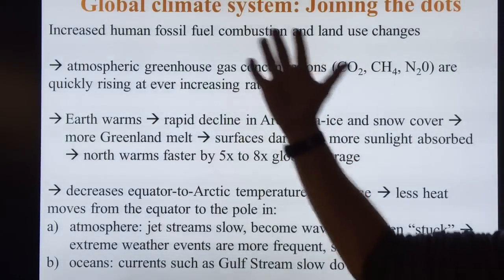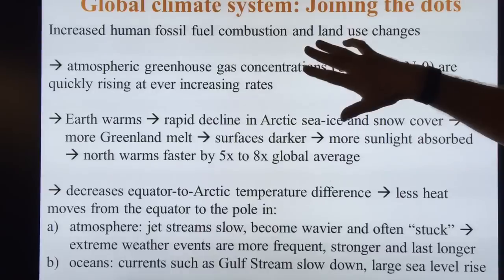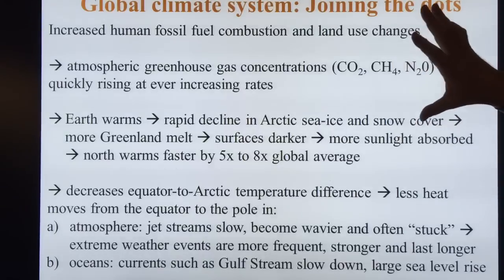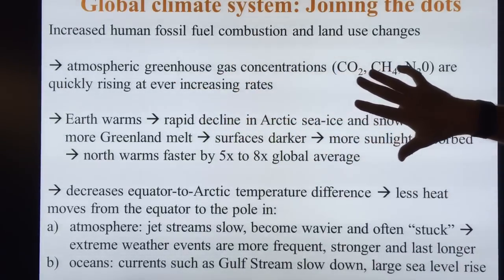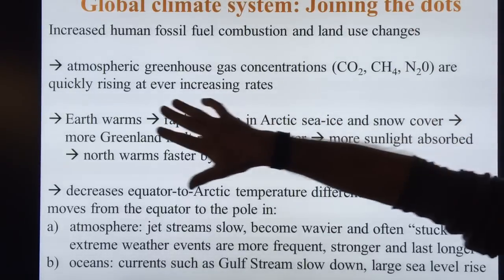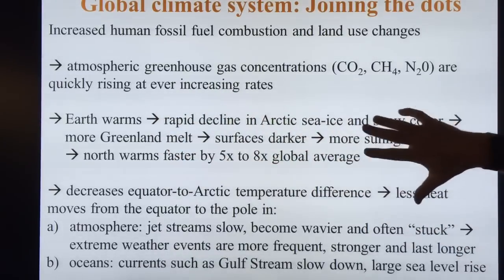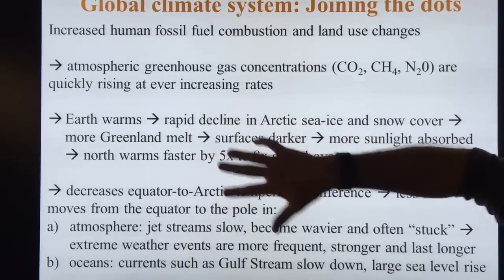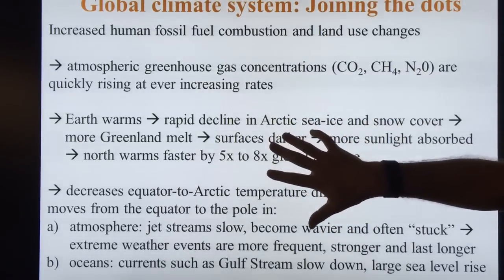Basically, I look at the global overall climate system and I try to join the dots. So increased human fossil fuel combustion and land use changes have been occurring on a large scale since the industrial revolution. There are a lot more people on the planet and our technology has become more sophisticated, so we can have a much larger influence on the planet as time goes on. Atmospheric greenhouse gas concentrations — CO2, methane, nitrous oxide — are quickly increasing at an ever-increasing rate; this is exponential growth. The Earth warms, we get a rapid decline in the Arctic sea ice and snow cover that melts. We get more melting on Greenland, so the Arctic is darker.